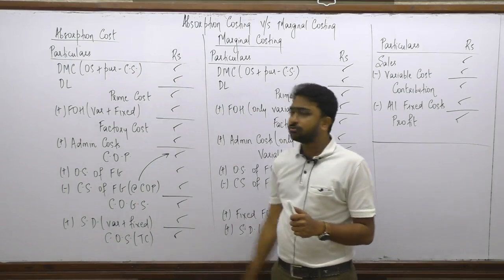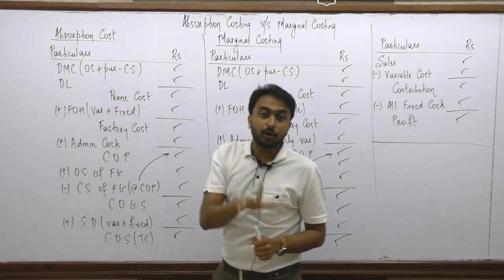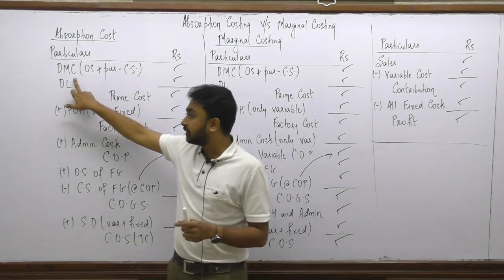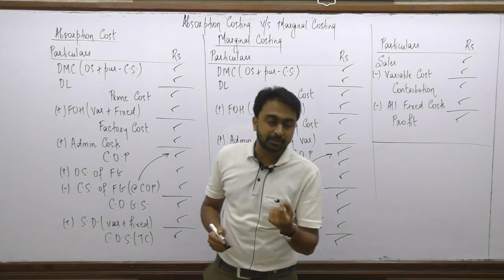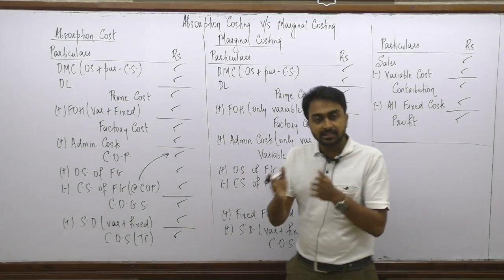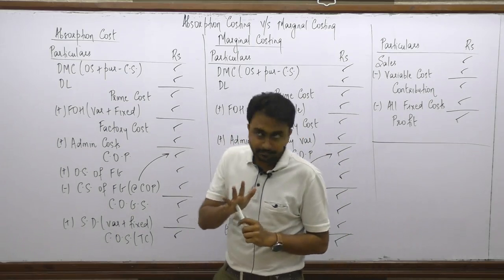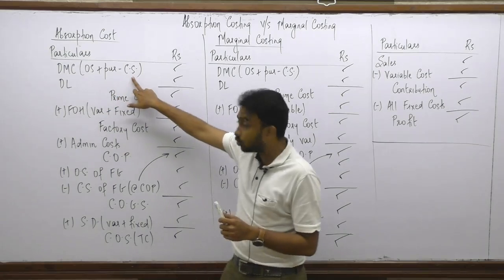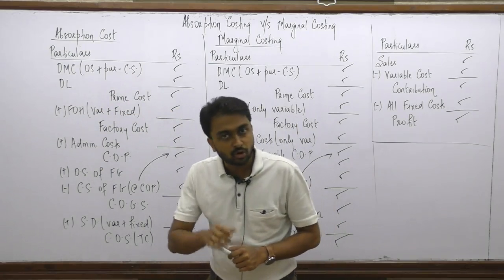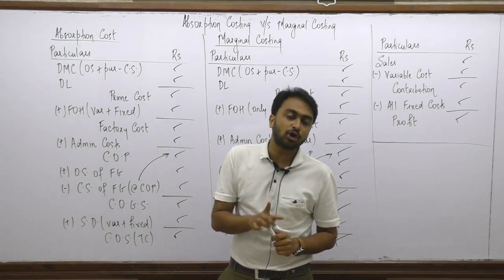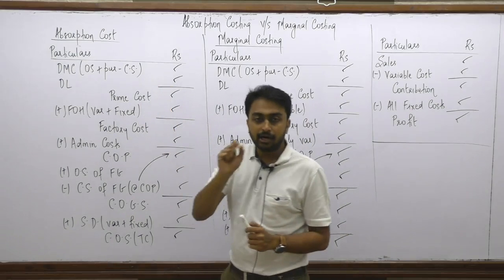I have prepared the absorption costing cost sheet. We start with direct material consumed — and importantly, it is consumed, not purchased, because only the portion actually consumed, say 80% or 90% of what was purchased, is the cost in the books of accounts. We calculate this as opening plus purchase less closing stock of raw material. Direct labour also comes into prime cost, as both DM and DL are direct costs and prime cost elements. DM plus DL gives us prime cost.